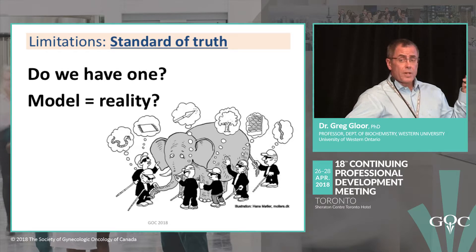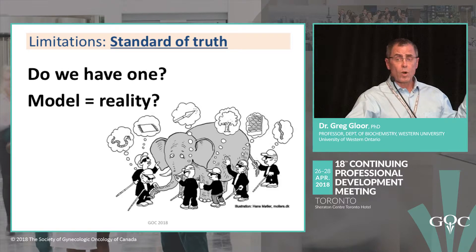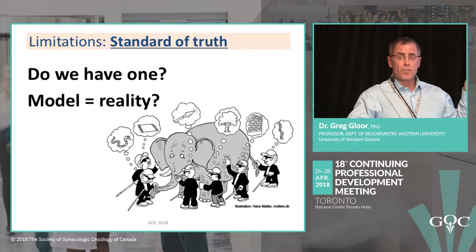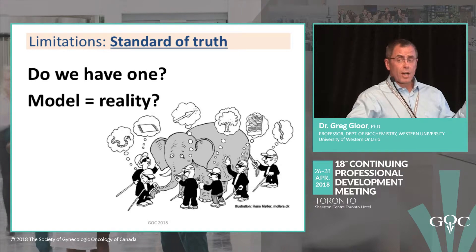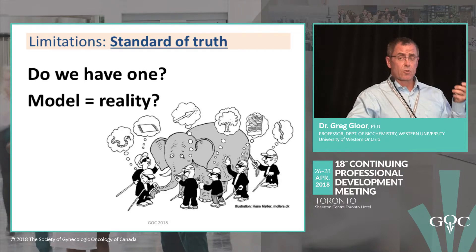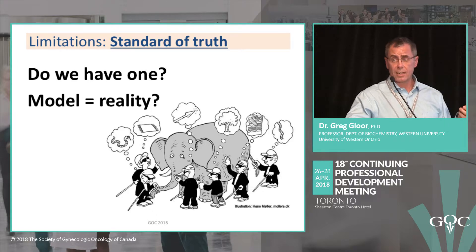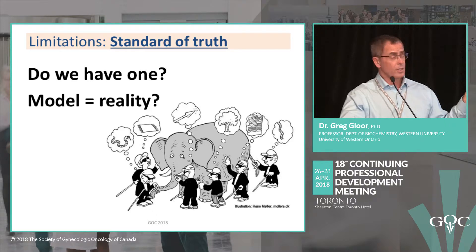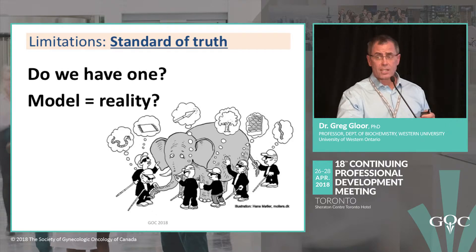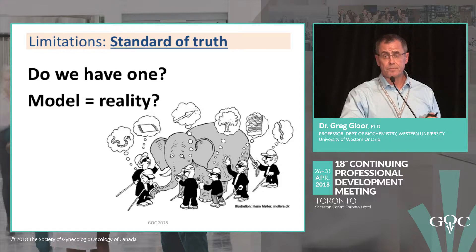We don't have a good handle on cancer. We don't have a pure standard of truth, so any model we make is not based on reality but on our perception of reality. It's the old philosophy problem of blind philosophers and the elephant.